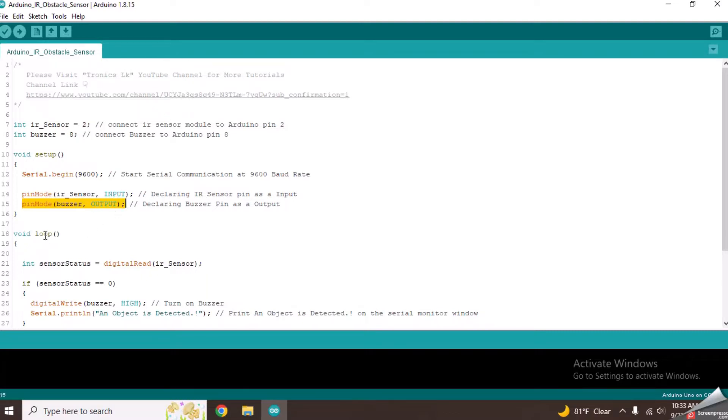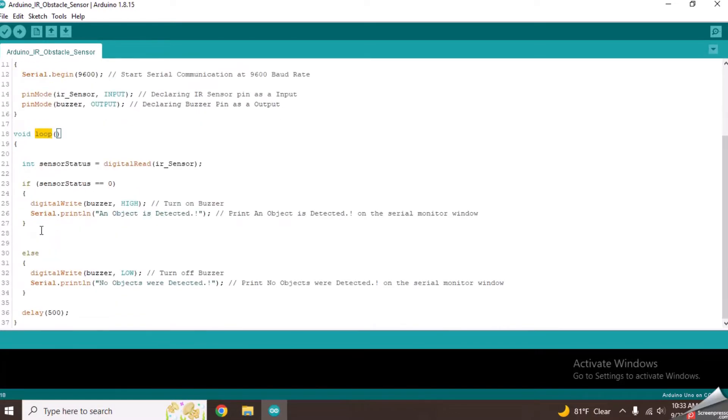Now, let's come to the loop function, which runs again and again. From this line, it reads the digital input from the IR sensor and saves it in a variable called sensorStatus.